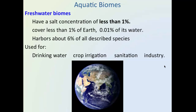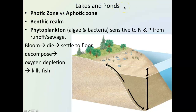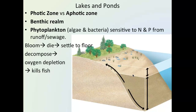For standing water like a lake, you have distinct zones. The photic zone extends from the surface to the depth where sunlight can penetrate and support photosynthesis. After that depth, wavelengths of light are insufficient to sustain photosynthesis — that's the aphotic zone. The benthic realm is the very bottom floor of the body of water.